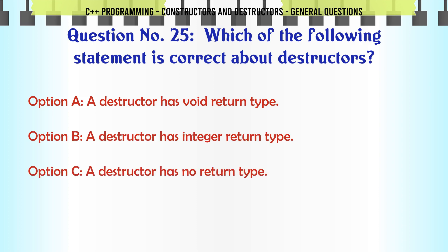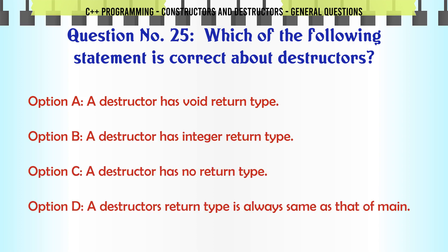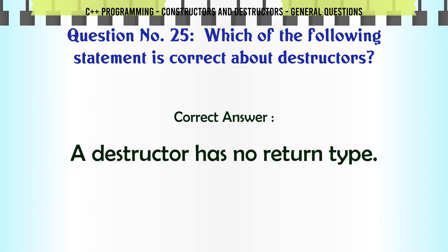Which of the following statements is correct about destructors? A. A destructor has void return type. B. A destructor has integer return type. C. A destructor has no return type. D. A destructor's return type is always same as that of main. The correct answer is A destructor has no return type.